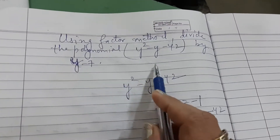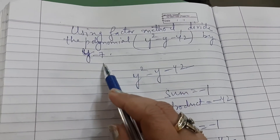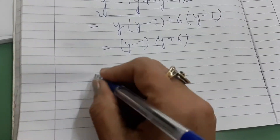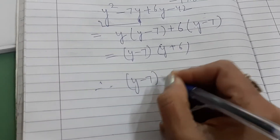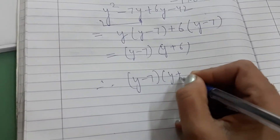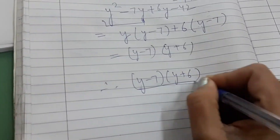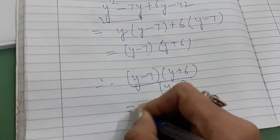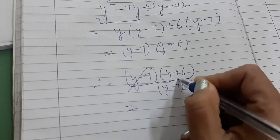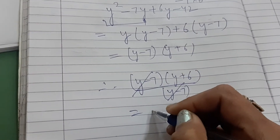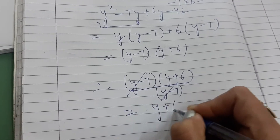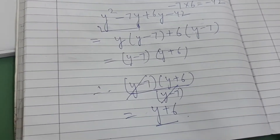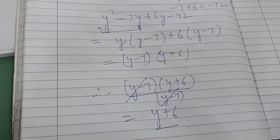But we have to divide this by y minus 7. Therefore, y minus 7 into y plus 6 divided by y minus 7 — y minus 7 gets cancelled. So the answer is y plus 6. Is it clear?